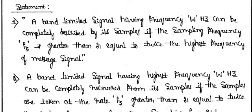The sampling theorem states that any band-limited signal having a highest frequency of W hertz can be completely described by its samples, if the sampling frequency is greater than or equal to two times of W — the highest message signal frequency.